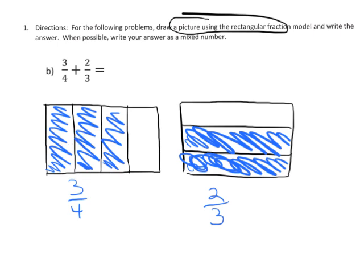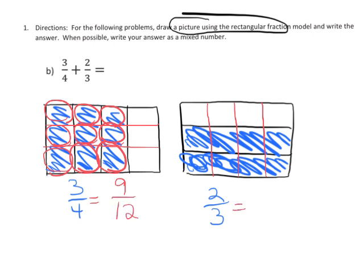Just like in the previous video, we're going to cut each of the fourths into thirds and each of the thirds into fourths. I'll use my red pen to do that. That means three-fourths becomes nine-twelfths, and two-thirds becomes eight-twelfths.